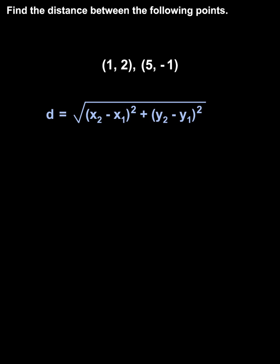Our first point (1, 2) represents x₁, y₁, and our second point (5, -1) represents x₂, y₂.